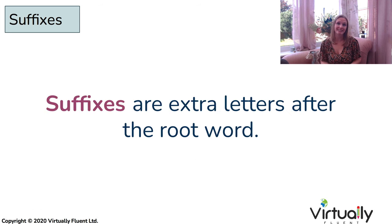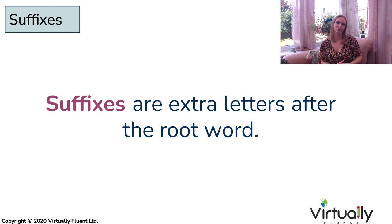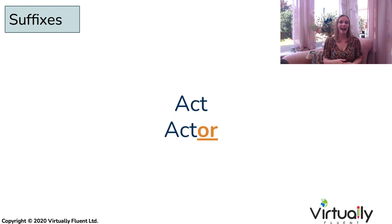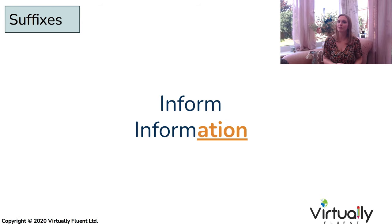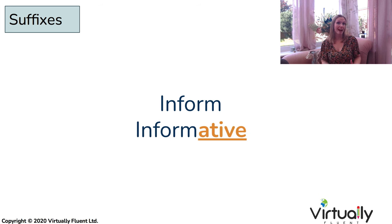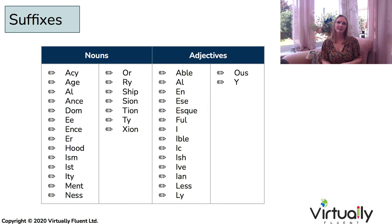So we're going to move on to suffixes now, which are very similar to prefixes because they are groups of letters pushed together, but these are put at the end of the root word instead. Let's take the example 'act' becoming 'actor' — that '-or' ending creates a noun in this case. Or here's another example: from 'inform' to 'information' — that '-ation' ending has also created a noun. But we could also add '-ative' instead — 'informative' — and now we've changed this to an adjective.